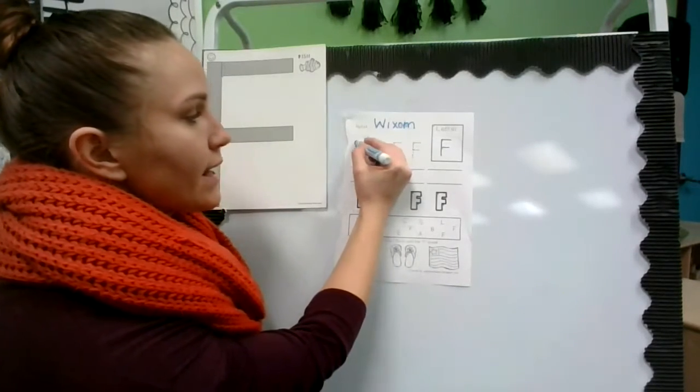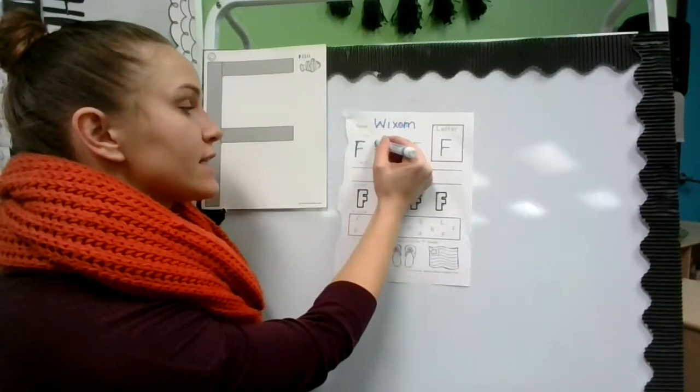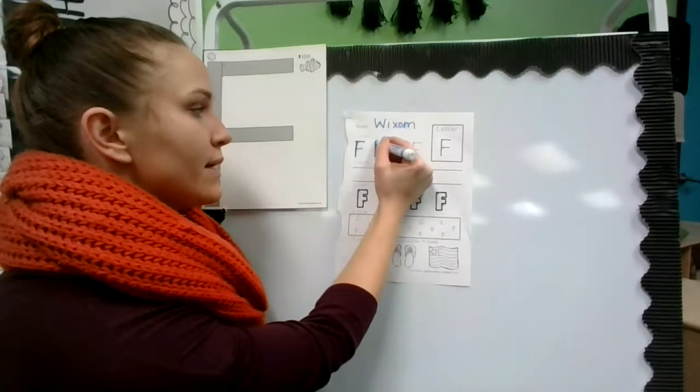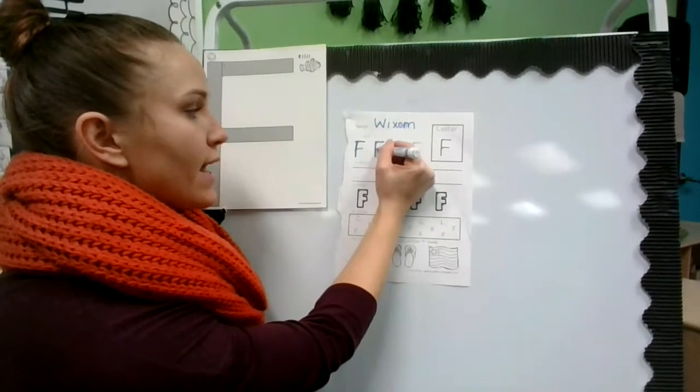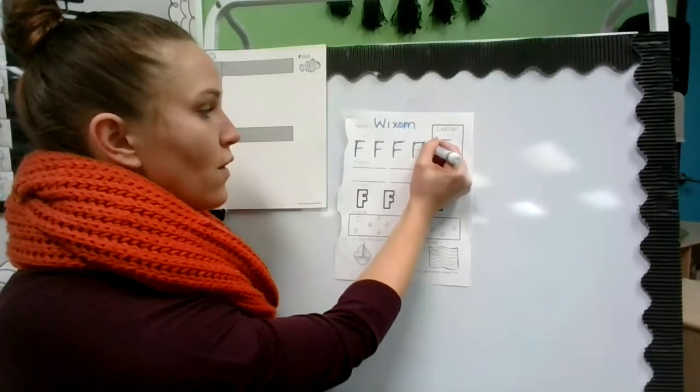Say it with me. Big line, jump back up, little line on top and middle. Again, start at the top. Big line, jump back up, little line on top and middle. And you're going to do that one, two, three, four times.